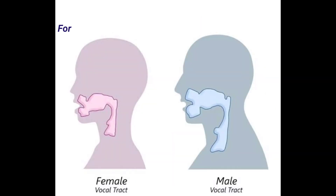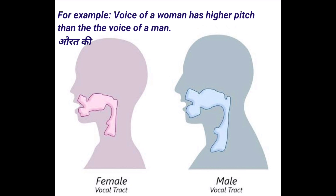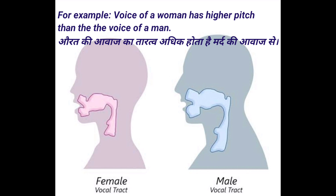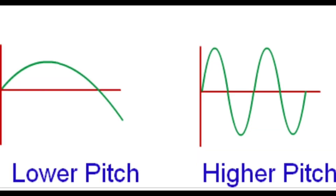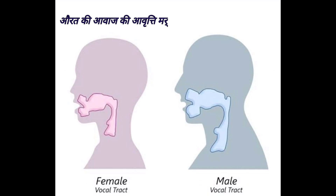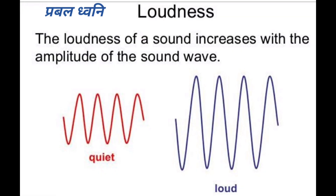For example, the voice of a woman has higher pitch than the voice of a man. Aurat ki avaj ka taratwa adhik hota hai mard ki avaj ke muqable. The frequency of women's voice is more than the frequency of a man's voice. You can see in the figure — aurat ki avaj ki avriti mard ki avaj ki avriti se adhik hoti hai.